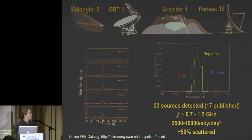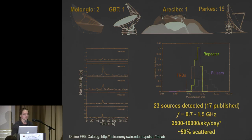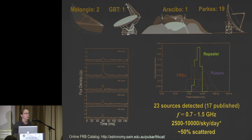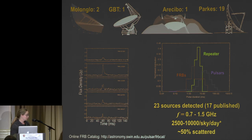So far we've only detected FRBs around L-band, which is roughly 0.7 to 1.5 gigahertz. The rates are debated, somewhere in the range of 2,500 to 10,000 in the sky per day — maybe one every 8 to 16 seconds. About 50% of them have been observed to be scattered.